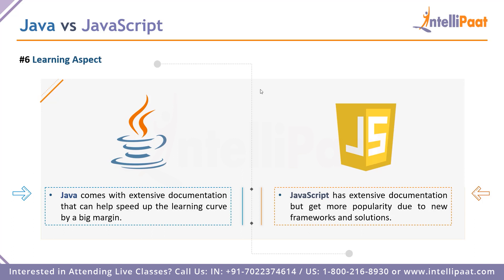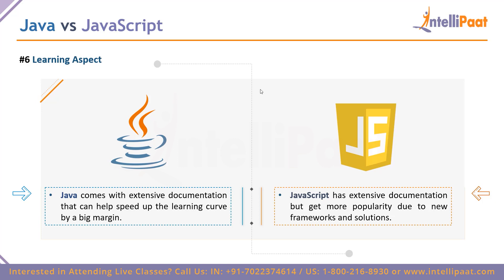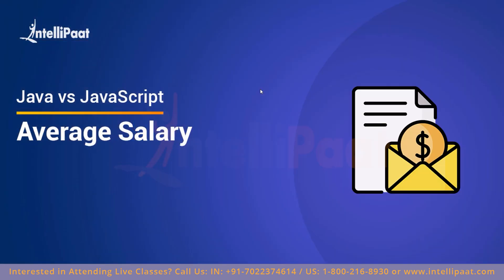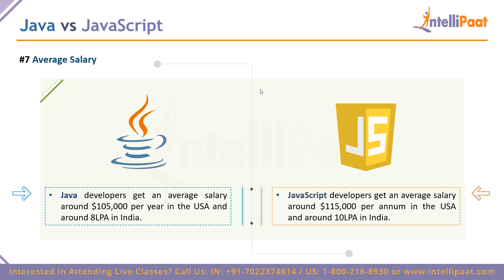Both Java and JavaScript are among the top 10 careers to pursue, so either one should serve you well depending on your goals — whether it's Android app development, mobile app development, or web development. Java developers get an average salary of around $105,000 per annum in the USA and around 8 lakhs per annum in India, while JavaScript developers earn slightly higher at around $115,000 per annum in the USA and around 10 lakhs per annum in India. These are very achievable numbers if you are certified and have the skills to solve problems.